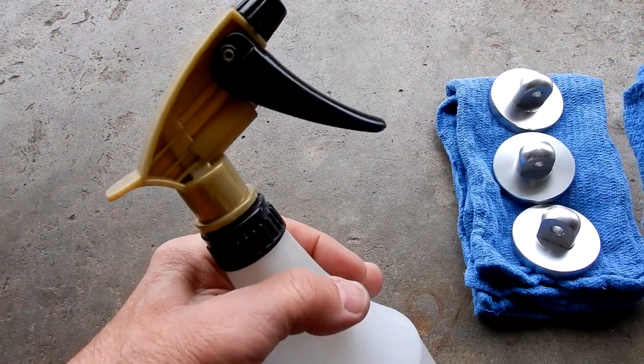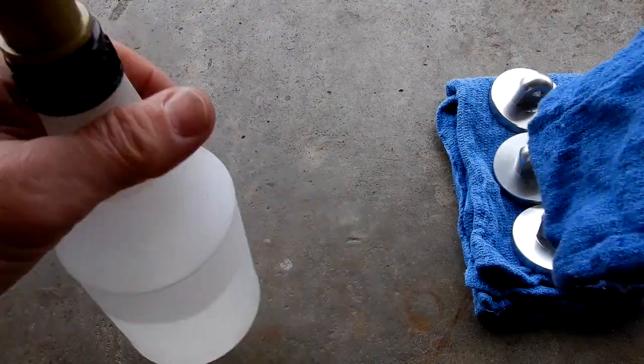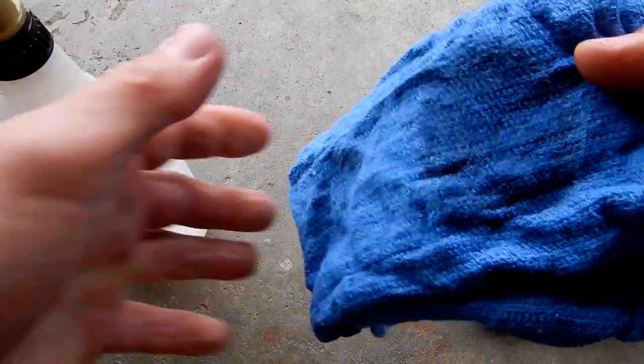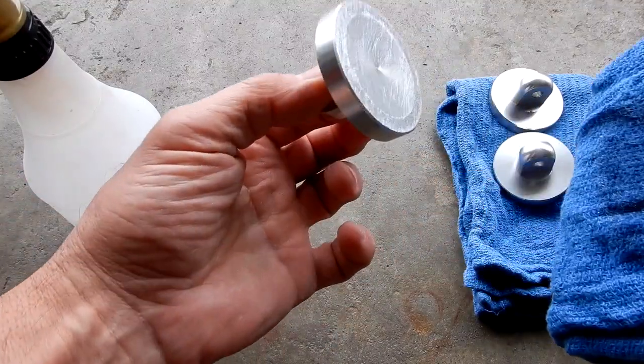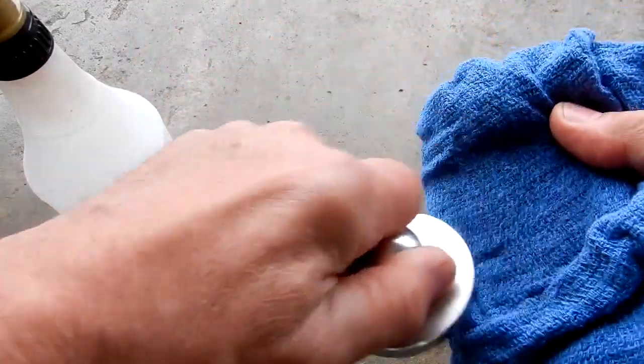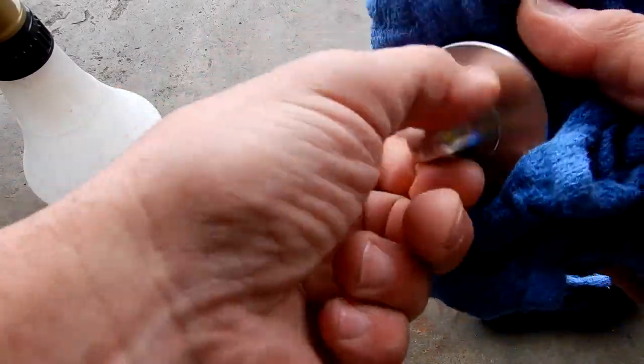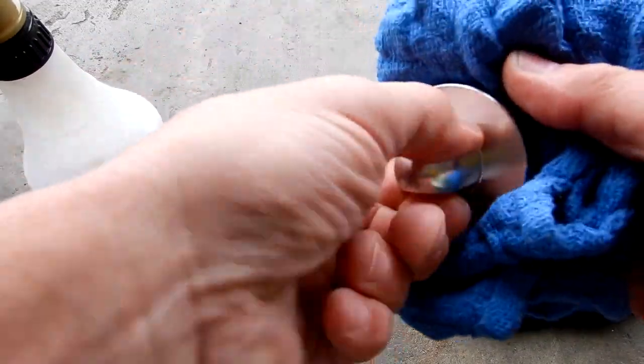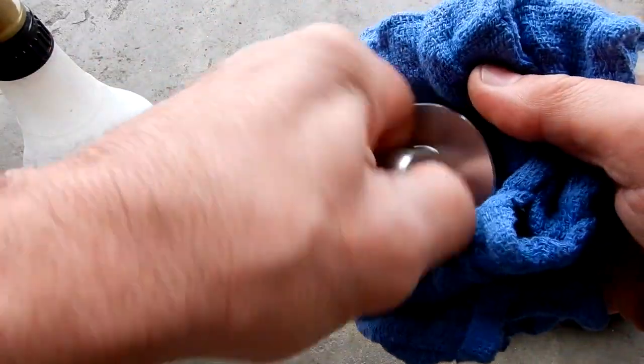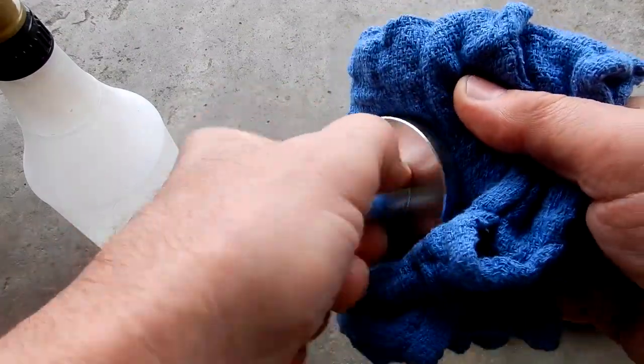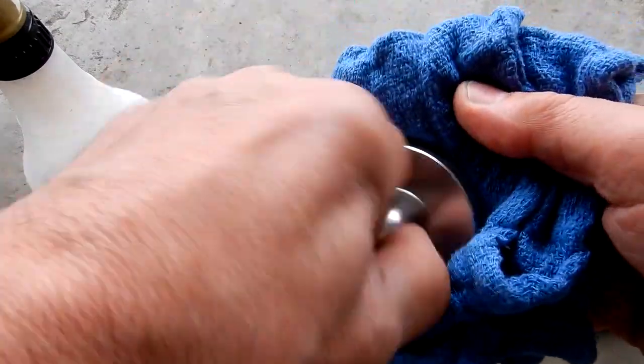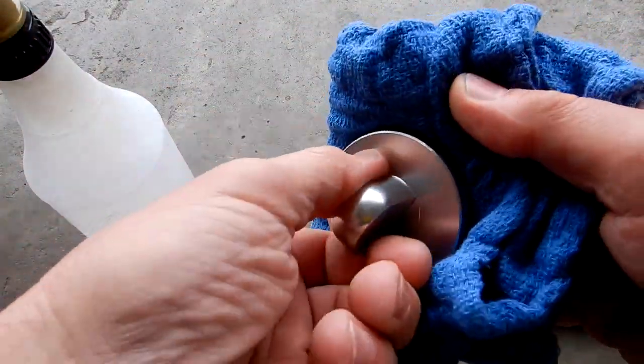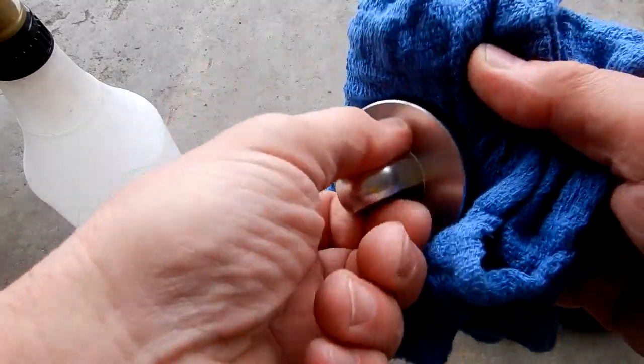What I'm going to do is I have the lacquer thinner, this is just what I'm using. I'm going to spray some lacquer thinner on a rig and then being careful, I just want to do the bottom. That's a clean rig that I'm setting them back down on.